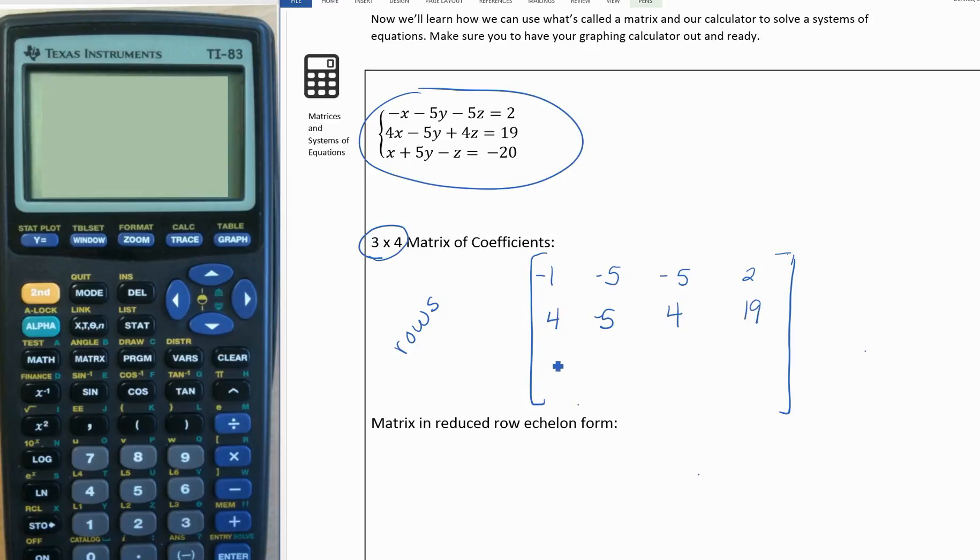The third equation: we have 1x, 5y, negative 1z minus 20. If you didn't have a z in one of the equations, you'd want to put a 0 where the z would have been.